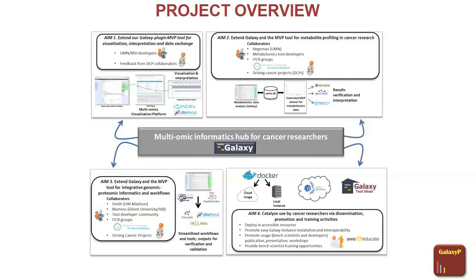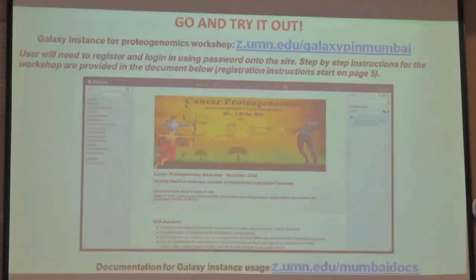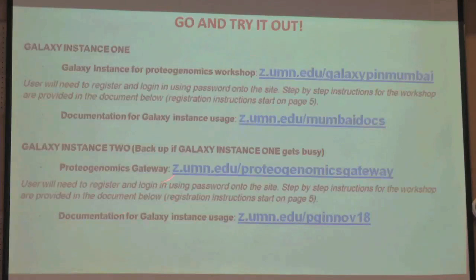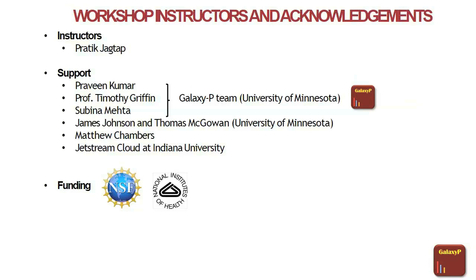We are developing tools and workflows to enable that analysis as well. To try it out, look at the site — all you need is a login and password. We have used these detailed documents for at least three workshops this year, so feel free to try it out. As a backup, there is another instance available for longer if the primary one fails. We acknowledge Praveen Kumar, Professor Tim Griffin — PI of the Galaxy Grant — and Subina Mehta, who tested the tools and worked on the documentation.